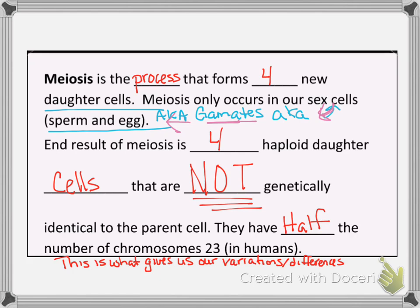Having 23 chromosomes — the half from each parent — is what gives us our variations and our differences. We don't want to be clones; we all want our unique individuality. We want to be individuals. You don't want to look just like your sister or just like your brother. That's how we become individuals — by this halving of our chromosomes.